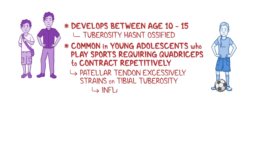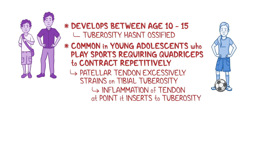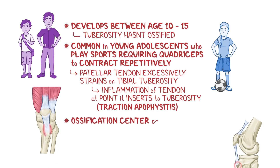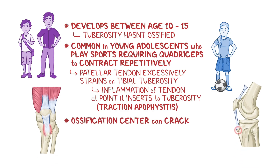This results in inflammation of the tendon at the point it inserts to the tuberosity, what is known as traction apophysitis. When the traction is too excessive, it can cause the ossification center inside the tuberosity to crack into tiny bone fragments.